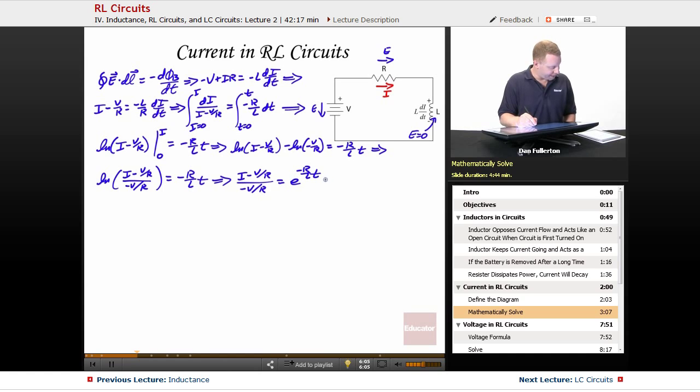Or doing a little bit of algebra here, we'll multiply both sides by that minus V over R so that the left hand side it becomes I minus V/R equals minus V/R E to the minus R over L t.